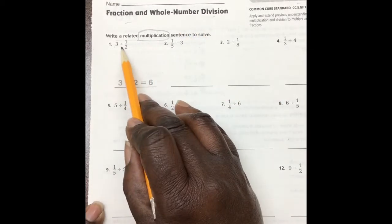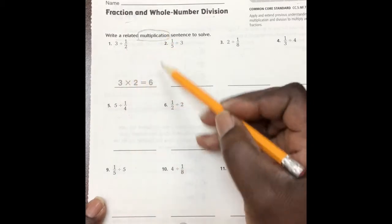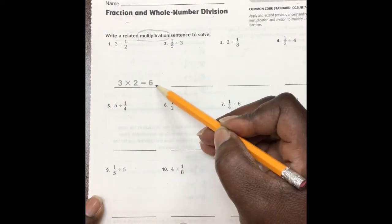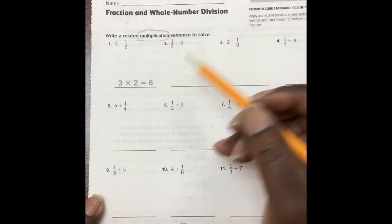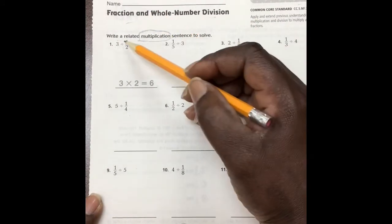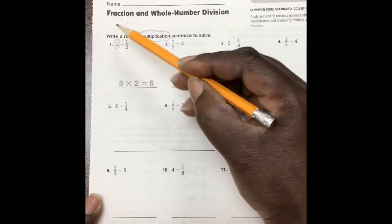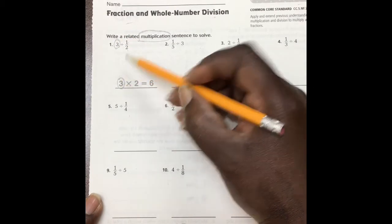3 divided by 1 half. The relationship is 3 times 2 equals 6. Well, let's take a look at this. Let's do a comparison. When we compare our first digit, 3, we notice that there is no change.